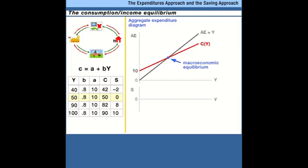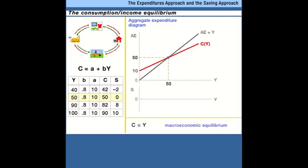At this level of output, we have consumers getting an income of 50, planning to do consumption of 50, so total consumer spending — which in this story is the entire aggregate expenditure, since consumers are the only people in our model so far — aggregate expenditure is equal to income. Consumers are planning to spend an amount of money, 50, that generates an income, 50, on which these spending plans are based. That's macroeconomic equilibrium: the top of the circular flow balances the bottom. Consumption expenditures are equal to income.